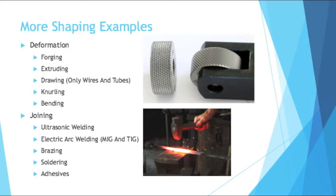There's knurling — that top picture shows what a knurl looks like. You've probably seen it on a lot of metal tools; you knurl to get that knurl. There's also bending, which most people are familiar with — you can do that with your own hands a lot of times.